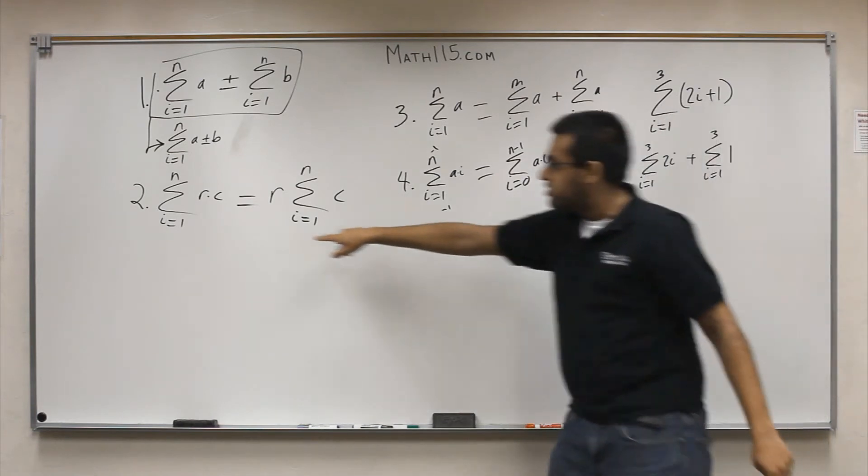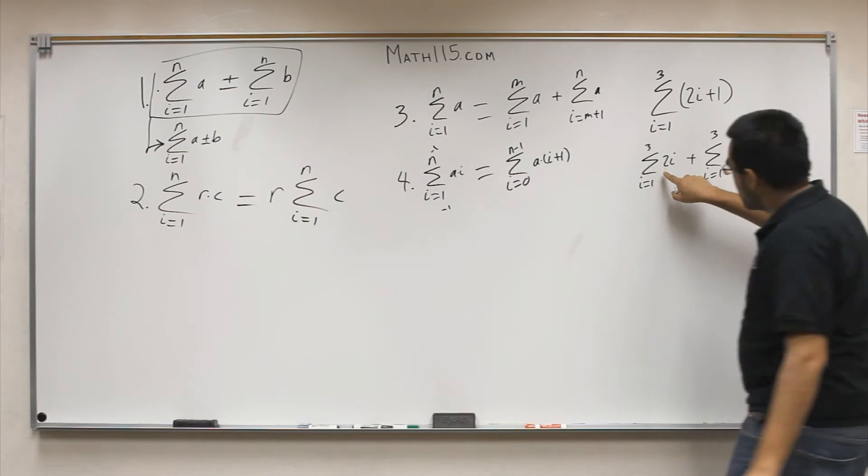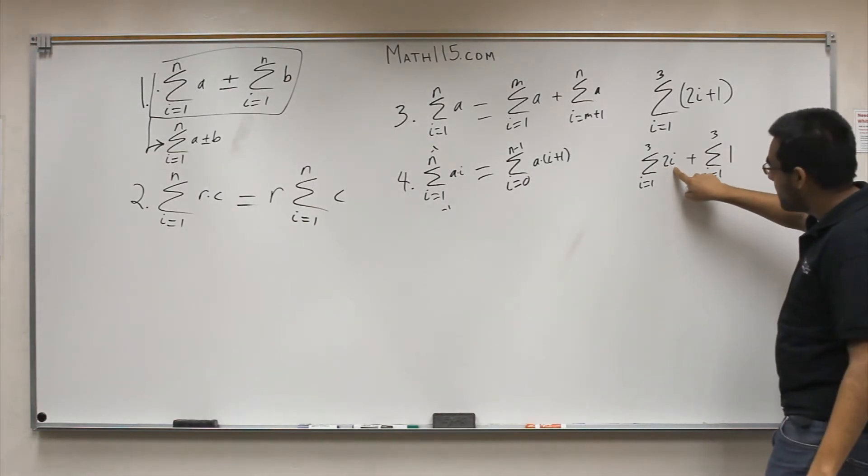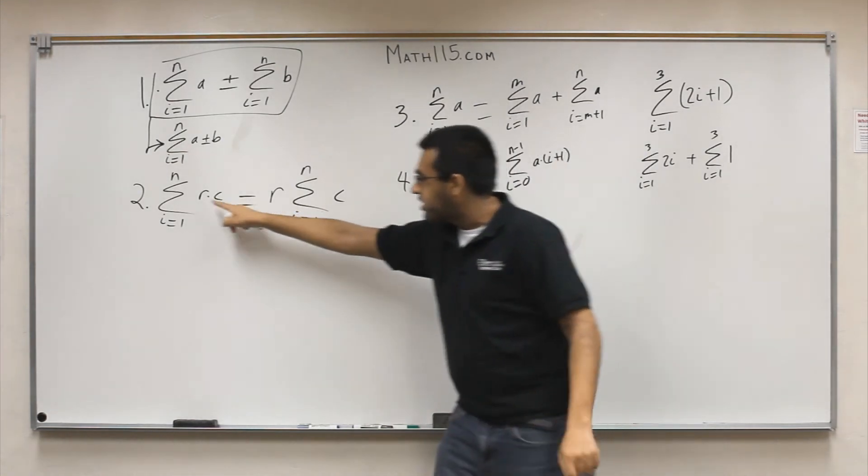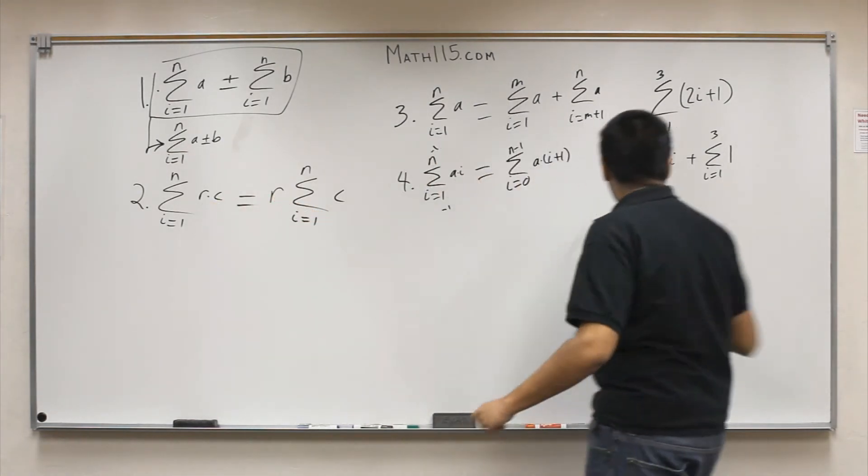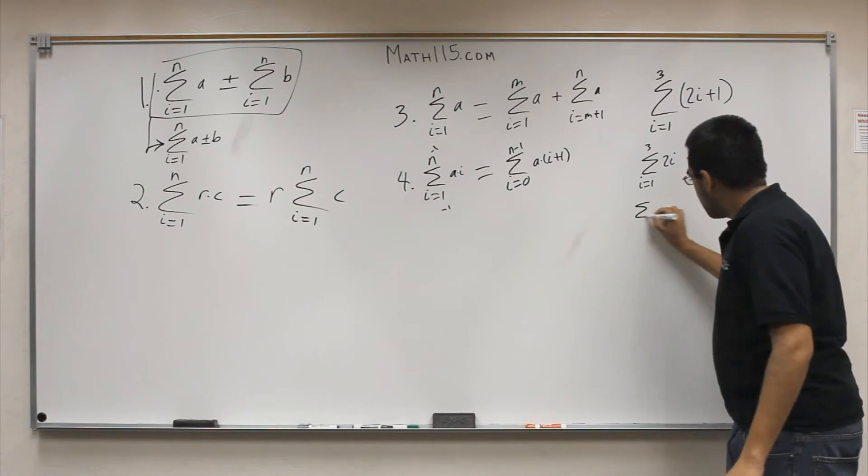Now, using our rule number 2, where we have a situation where we have 2 times something, we can bring this 2 out in front, just like we did here, where we brought the r out in front of the summation. So the way that'll look is when we break this up, we bring the 2 right here.